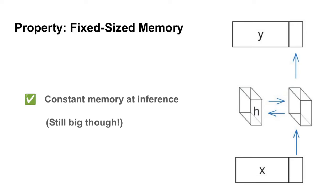There are two properties that all of these models share. The first is that they have a fixed-sized memory. This memory will remain constant during inference and will not change in size as the sequence gets longer. Now, I do want to note that just because this is constant size doesn't mean that it's small. Many of these models have very large but constant-sized memories.